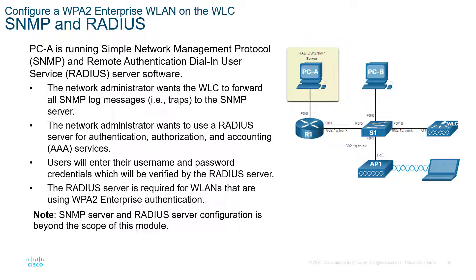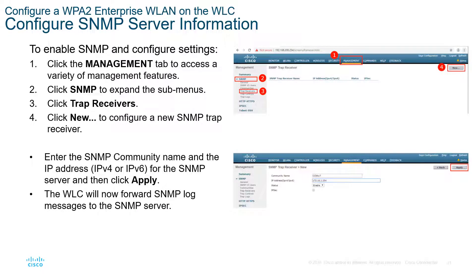In the real world, that might be like Active Directory or some type of other directory service. We're going to use PCB as our management computer — the PC we're connecting and configuring everything through. To set up SNMP, log in to the wireless LAN controller, go to Management, set up SNMP, set a trap receiver, and configure the IP address.